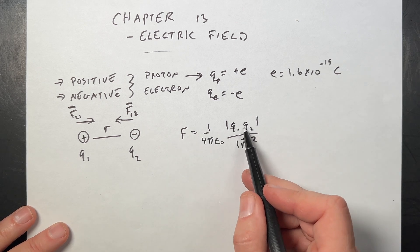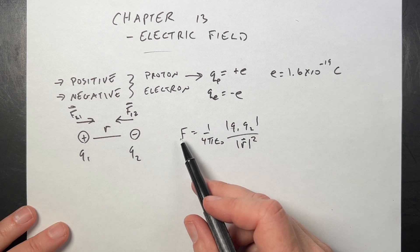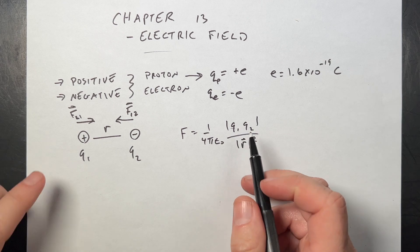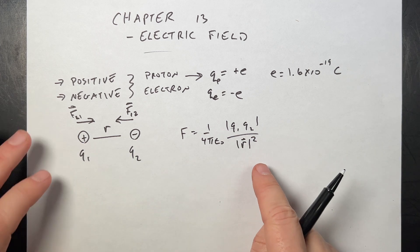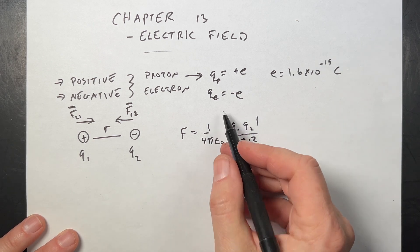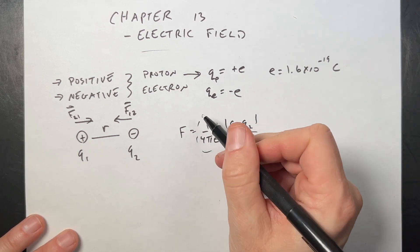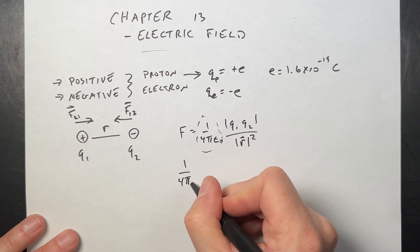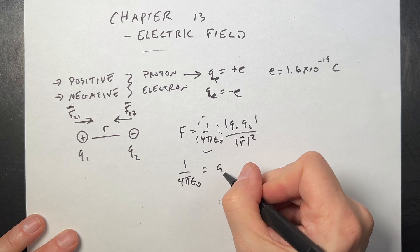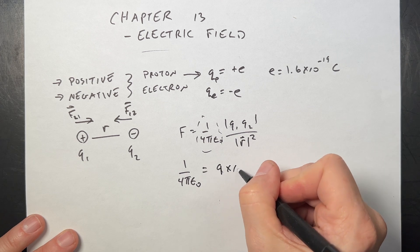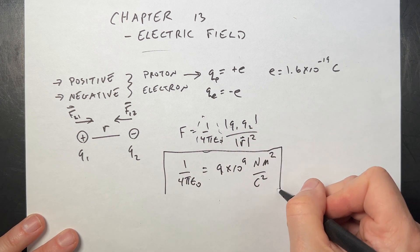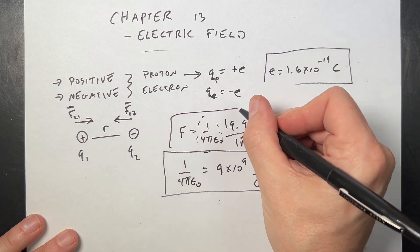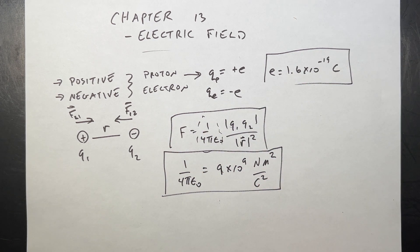It doesn't make sense to talk about those as positive and negative until we give a direction, and R — the vector from one charge to the other — is also a vector, so you have to take the magnitude before you square it. The important constant here is 1 / 4πε₀ = 9 × 10⁹ N·m²/C². That's kind of a big deal — that's the electric force, the Coulomb force between two charges.